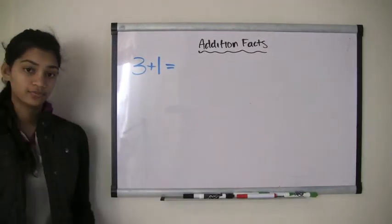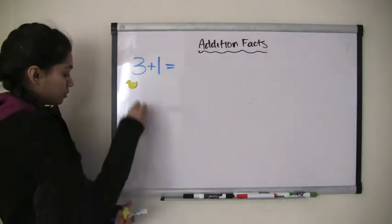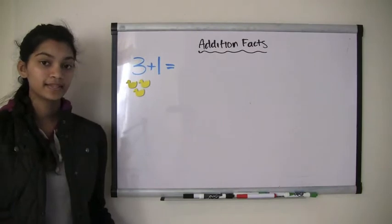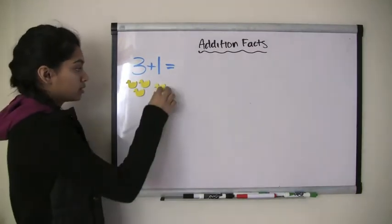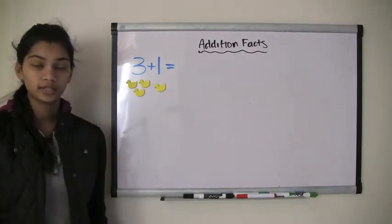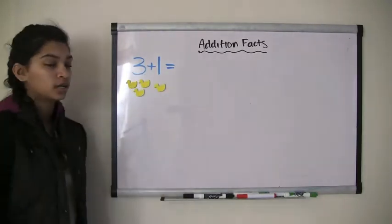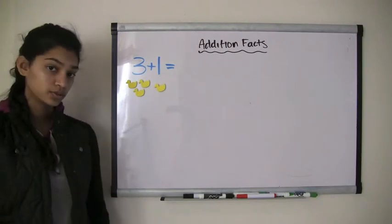So let's say I have 3 ducks. 1, 2, 3. And let's say I got 1 more duck. So now, how many ducks do I have in total? I have 1, 2, 3, 4. So 3 plus 1 equals 4.